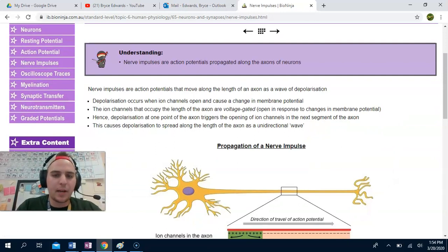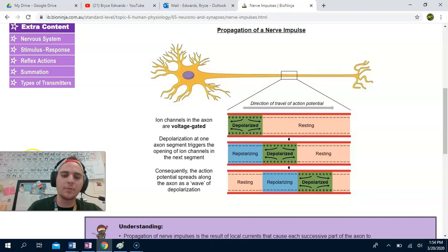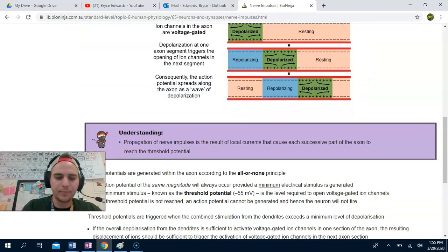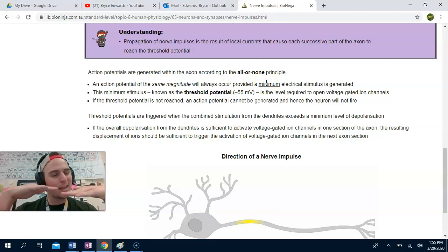Nerve impulses, these are action potentials that are propagated along the axons. So, this is basically what I just talked about, and here it actually gives you a good representation of what I was talking about. A nerve impulse happens because depolarization happens, and that depolarization, the voltage change will actually open up the gates nearby. That will also then depolarize, whereas behind it, it will repolarize, and you get the signal moving down the axon, just like I showed you. So, propagation of nerve impulses is the result of local currents that cause each successive part of the axon to reach the threshold potential, meaning an action potential of the same magnitude will always occur provided a minimum electrical stimulus. All that means is that there needs to be just enough of a signal, and then, boom, it goes.